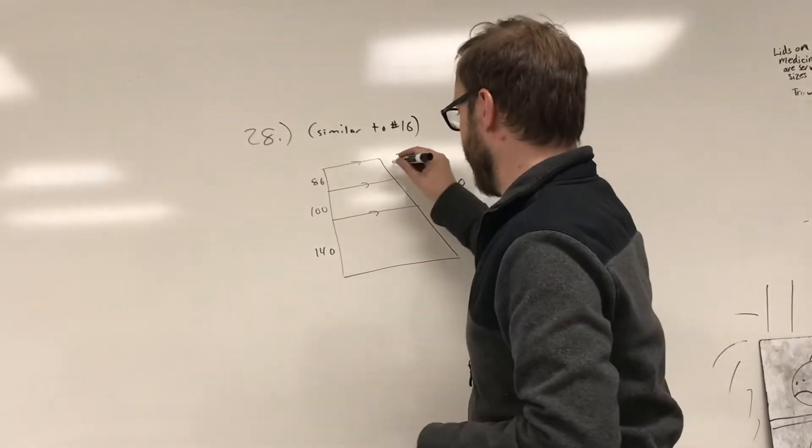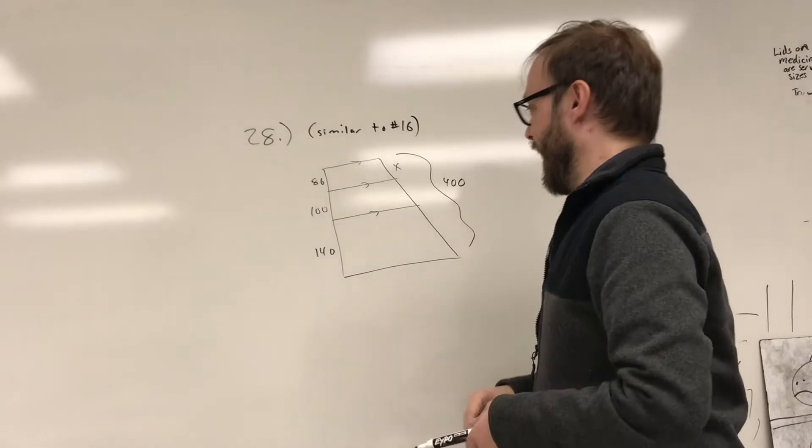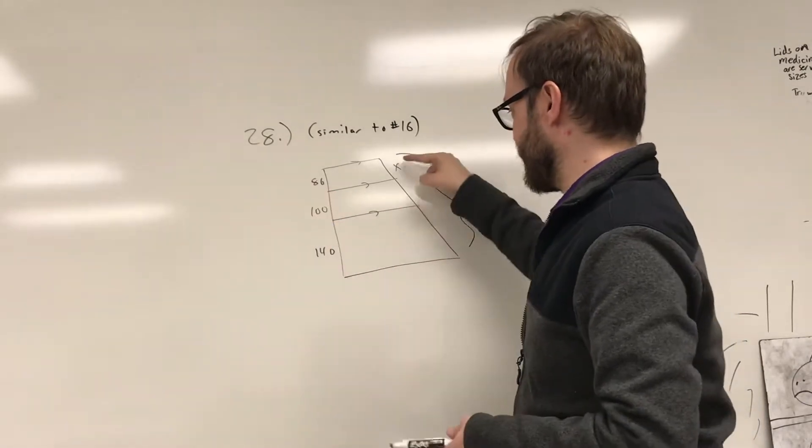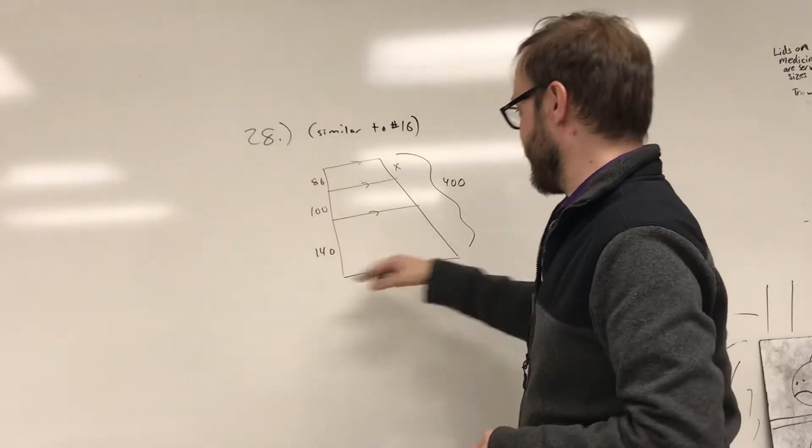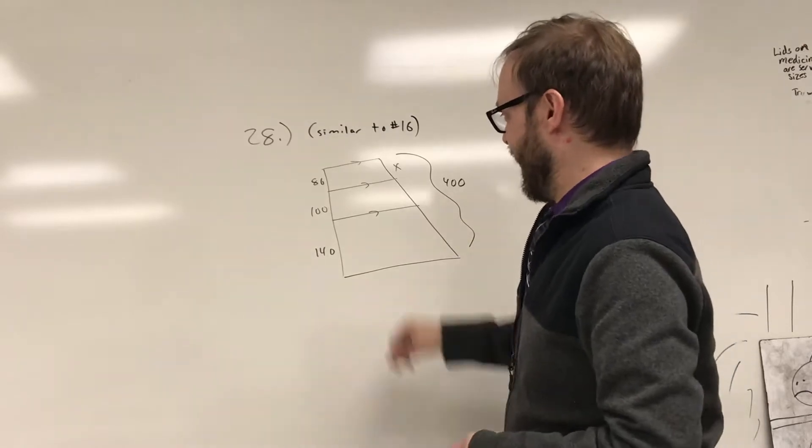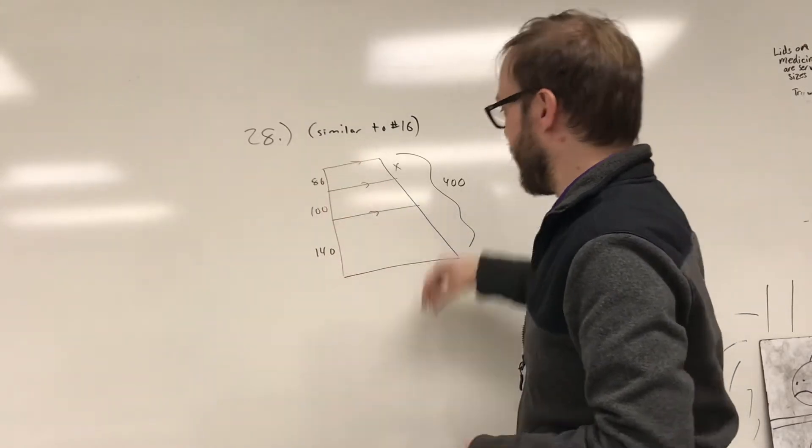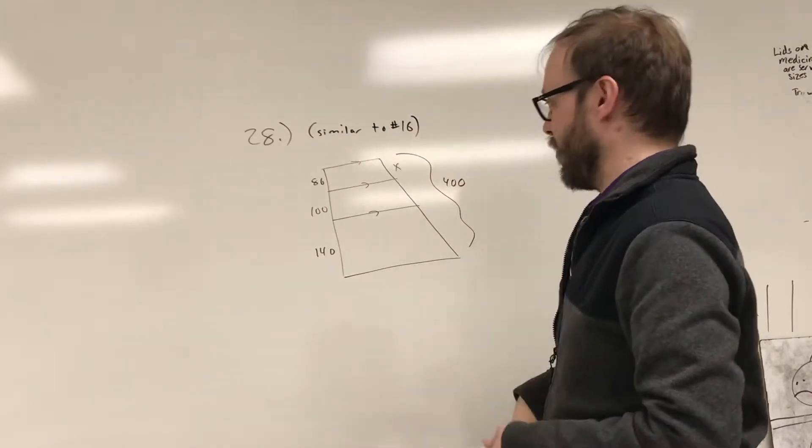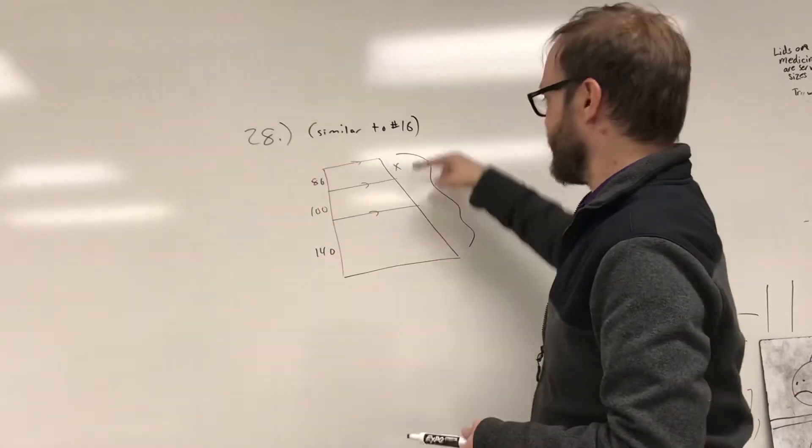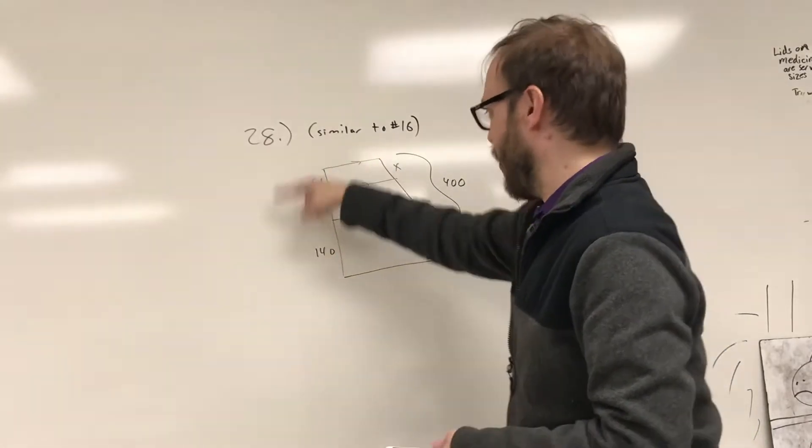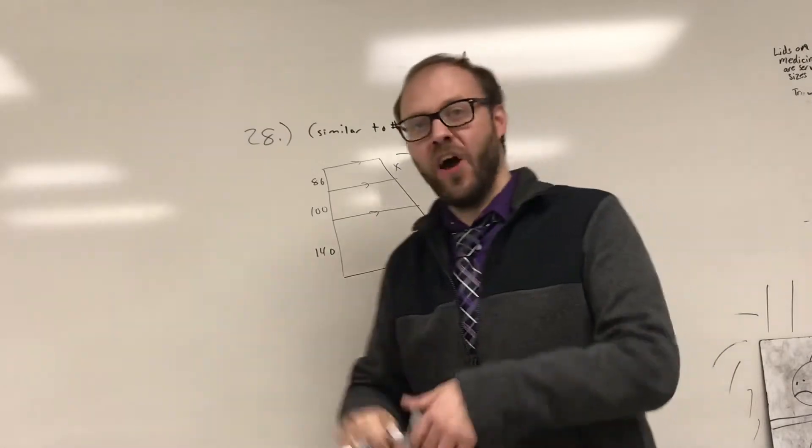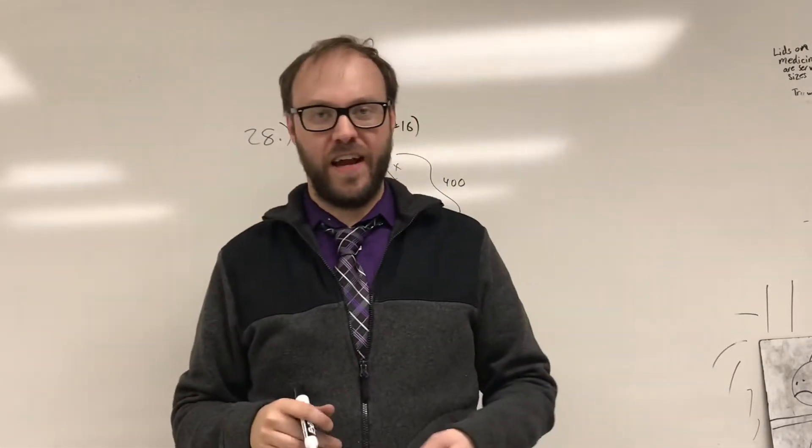If I want to find this length over here, basically I know that this over this is equal to this over this. The upper two parts over the lower part is equal to the upper two parts over the lower part. The upper part over the whole is equal to the upper part over the whole. The middle over the whole is equal to the middle over the whole. All of those different ratios that you can create are the same.